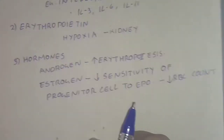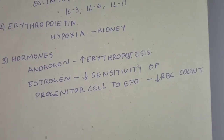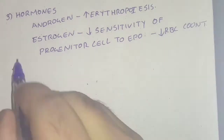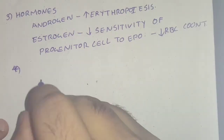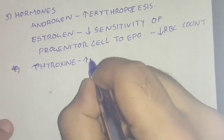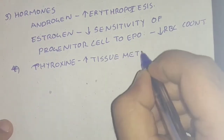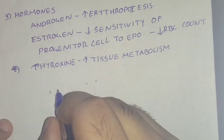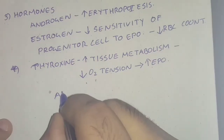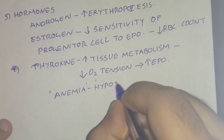Estrogen also inhibits the synthesis of globin in the liver. The next hormone is thyroxin, which increases tissue metabolism, leading to decreased oxygen tension, leading to increased EPO secretion.